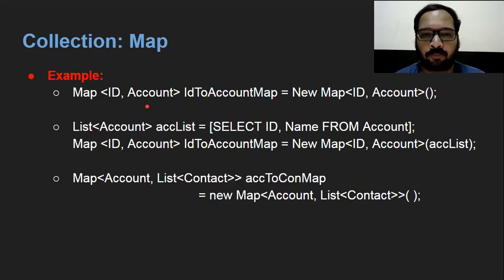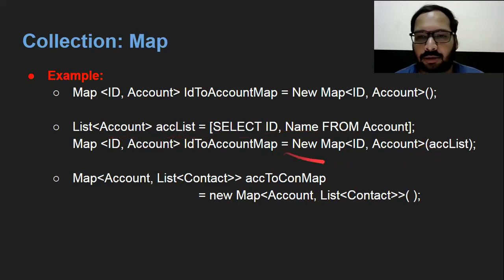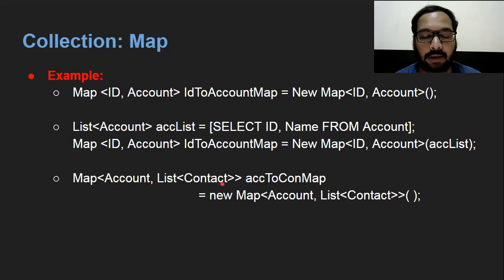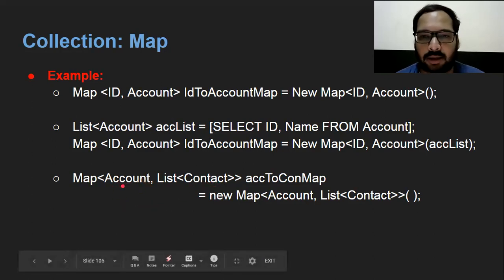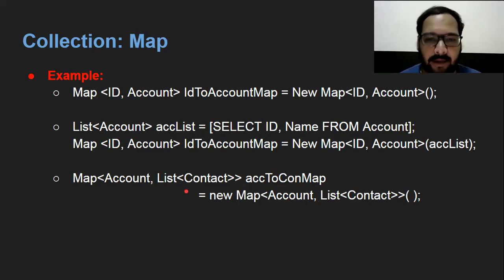You can also use Map with SObjects. For example, to store ID and account records together, create 'Map accMap.' You can create a list of accounts first and then convert it into a map by passing the list as an argument. In another example: 'Map<Account, List<Contact>>' — account is the key and a list of contacts is the value. This way you can use a list as values inside a map, combining collections together.